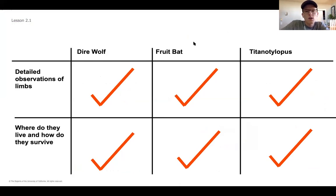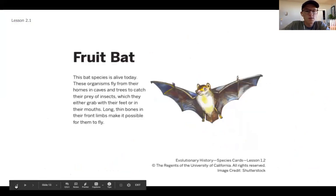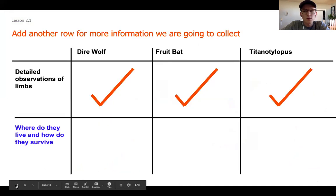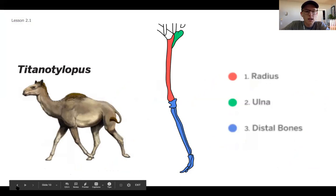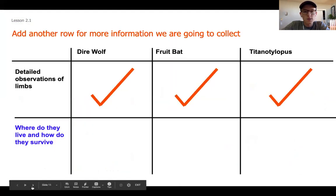We're going to go ahead and start the second half of this unit. Hopefully you had a chance to fill in this entire T-chart with some of your notes from the previous few slides that had information about the three different animals. There were also some observations you should have made based on the shared structures they had of their front limbs.